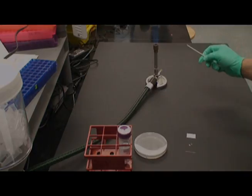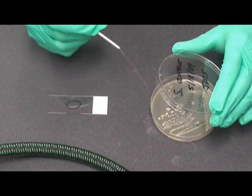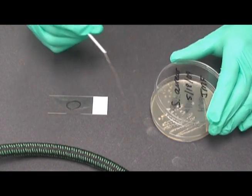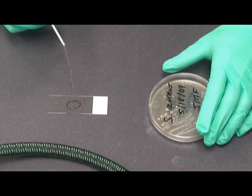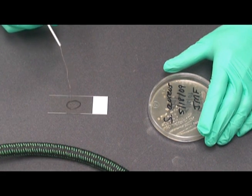Once again, sterilize the inoculating loop and after allowing it to cool, remove a small portion of one colony of bacteria from the plate and smear the bacteria together with the water.